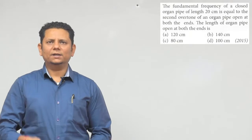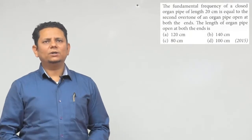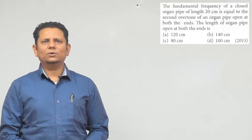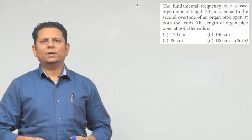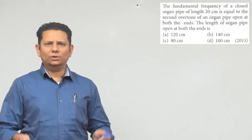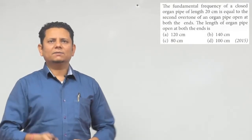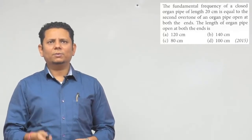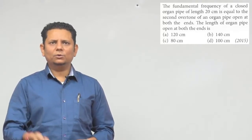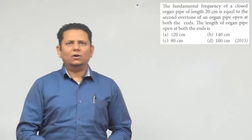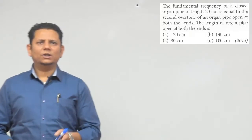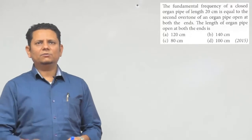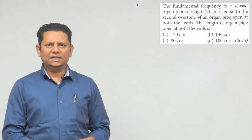The question says the fundamental frequency of a closed organ pipe of length 20 cm is equal to the second overtone of the organ pipe open at both ends. The question asks for the length of the organ pipe open at both ends, with options 120, 80, 140, and 100 cm.